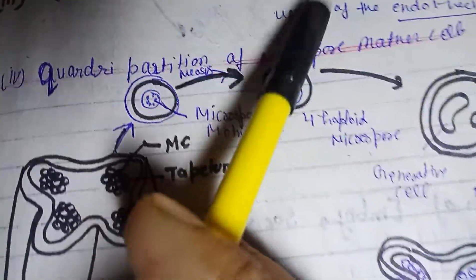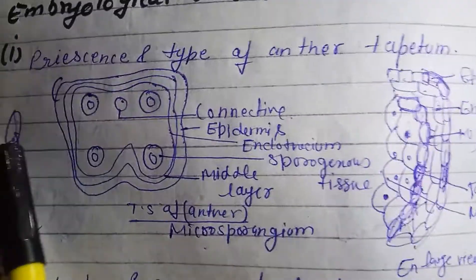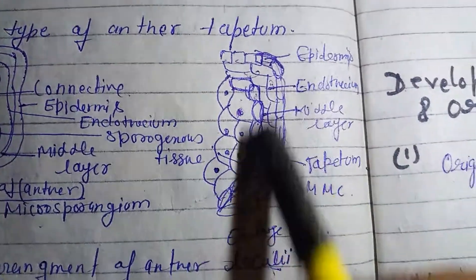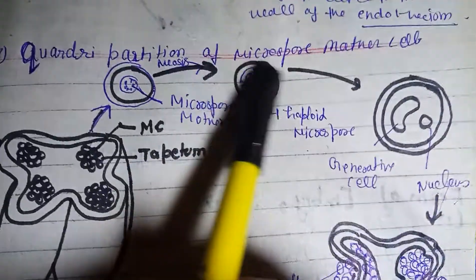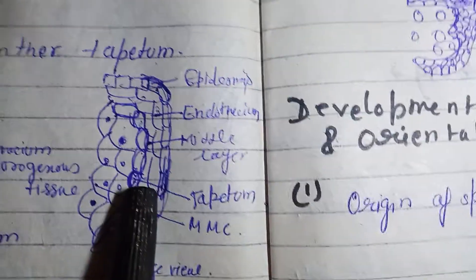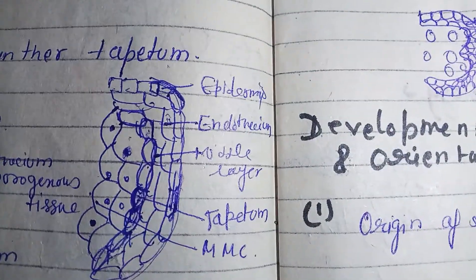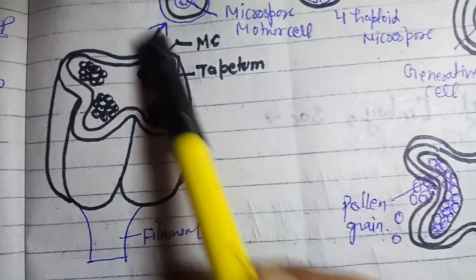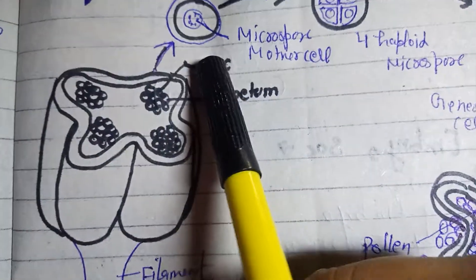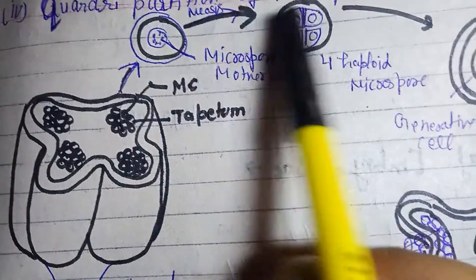The endothecium has its specific function. In the tapetum, we can observe the structures present within it. This structure is the filament, and this is the tapetum. Within the microspore cells, meiosis division will occur.